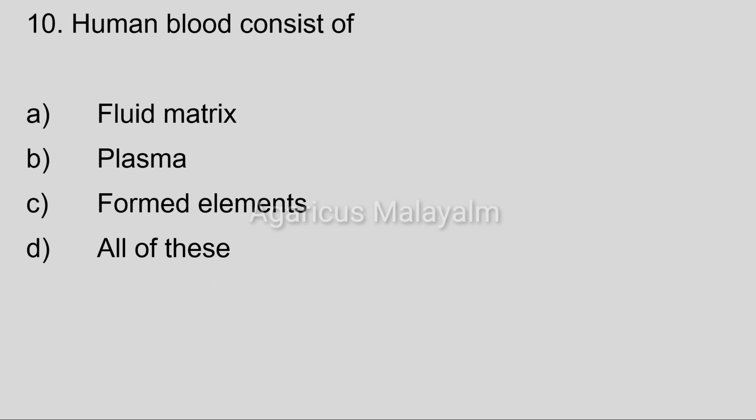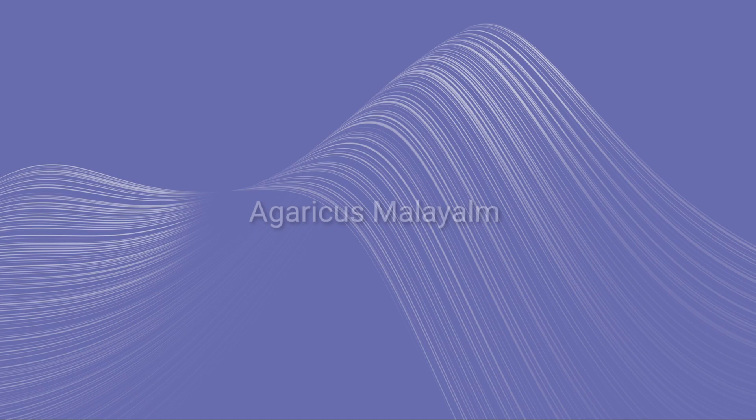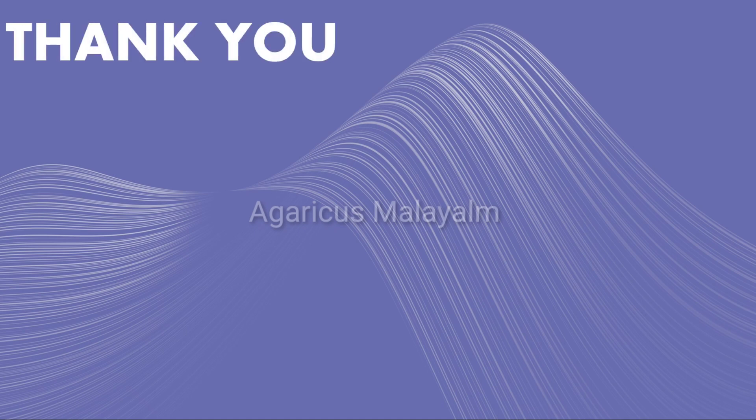Tenth question: Human blood consists of? Option A: Fluid matrix. Option B: Plasma. Option C: Formed elements. Option D: All of these. Correct answer: Option D, All of these.